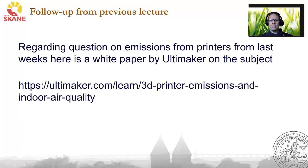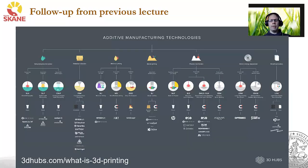In the Q&A session last week, there was an important question regarding emissions from printers during the print process. This is an important topic. Here is a good white paper by Ultimaker that goes into details. Parts are specific for Ultimaker and FDM printers, but the general principle holds. Also in the last lecture, I tried to give an overview of different printing techniques. I was made aware of a comprehensive overview of the different techniques, available at a link for those who want to go into depth.